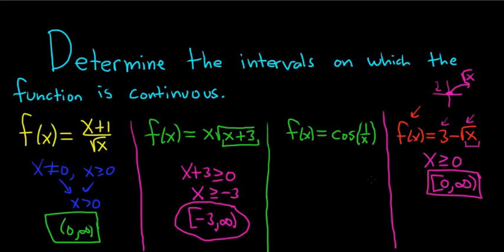These functions are continuous everywhere they're defined. The last one here is cosine of 1 over x. Well, cosine of x is continuous everywhere. But 1 over x causes a problem, and you guessed it, it's when x equals 0. So in this case, x cannot be equal to 0, so we're excluding 0.